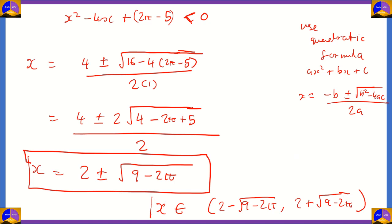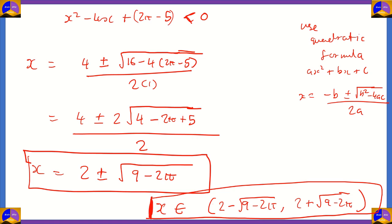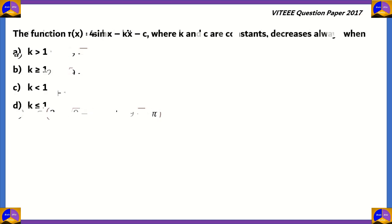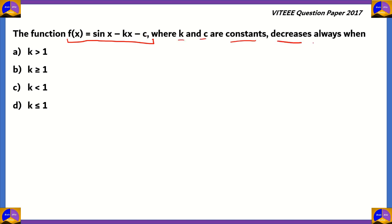Checking the options, option D is the correct condition for x. This was the question asked in 2017. Trigonometry itself is asked less frequently since most of the time it is clubbed with complex numbers. Let's move on to the final trigonometry question of this episode: the function f(x) = sinx - kx - c, where k and c are constants, decreases always when k is greater than 1, k ≥ 1, k < 1, or k ≤ 1.